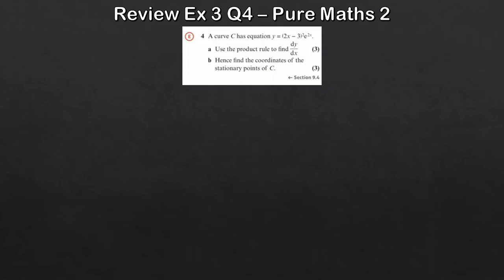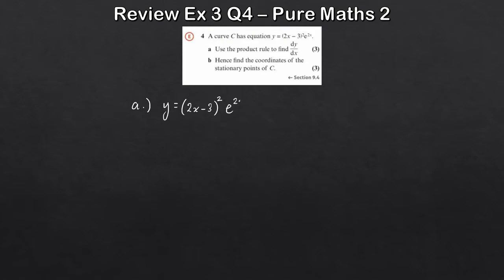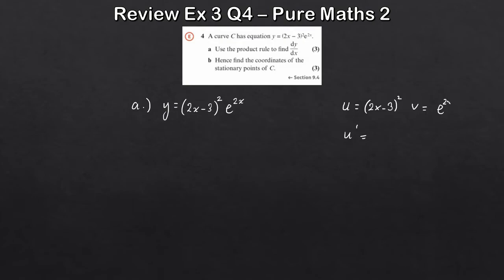Let's look at another question from the review exercise. Part b is slightly different — we want to find the coordinates of the stationary points of C. For question 4a, we use the product rule to find dy by dx, where y equals 2x minus 3 squared times e to the 2x. We split this into u equals 2x minus 3 squared, and v equals e to the 2x.